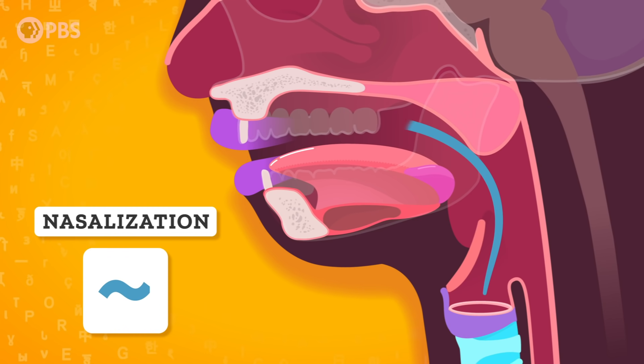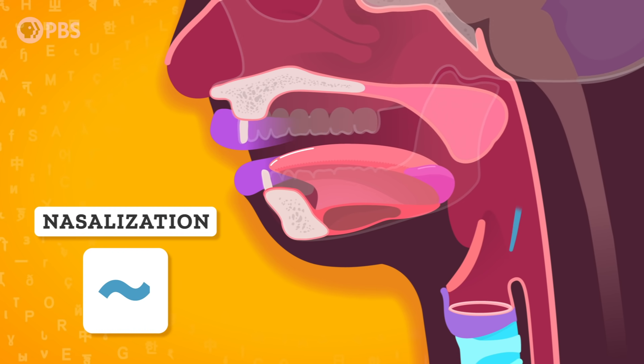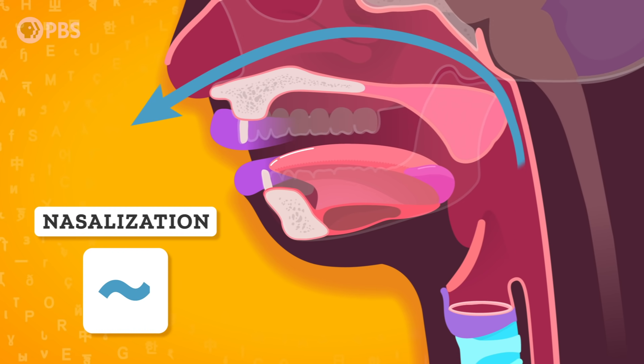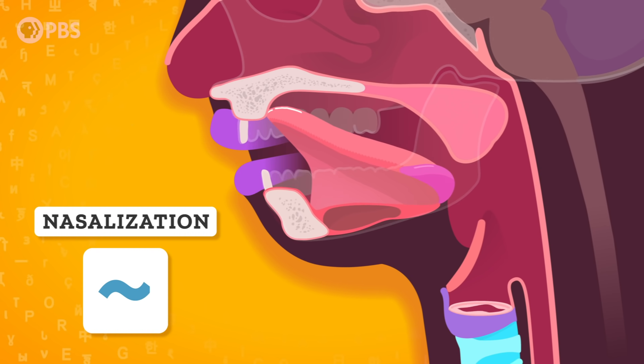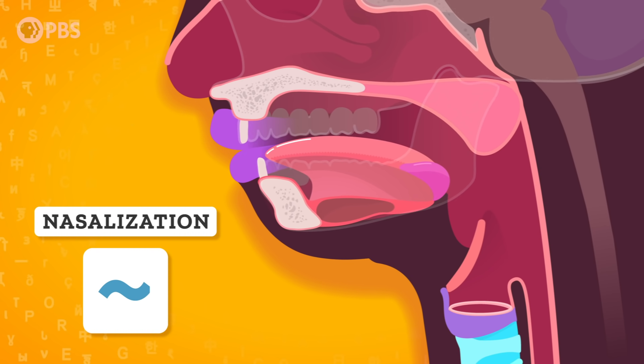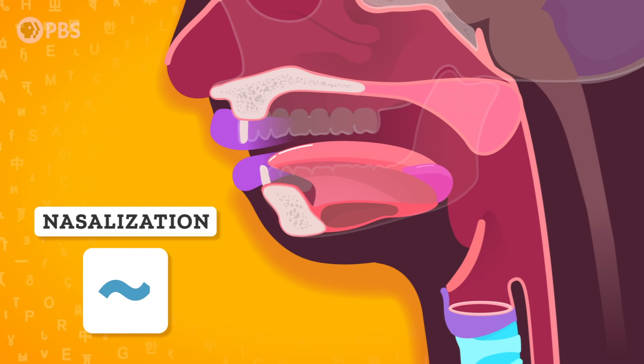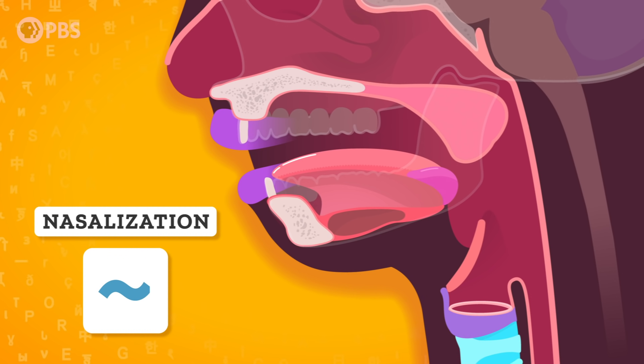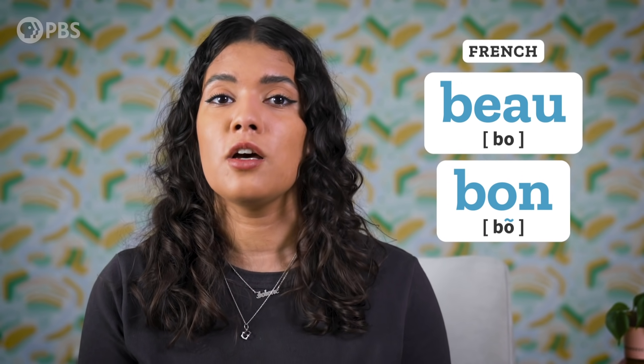Second is nasalization. We make the vowel sounds we've been talking about so far by moving air through our mouth. We can also make sounds by letting air flow through the nose. We make nasal consonants like 'm' and 'n' by completely blocking the air in the mouth and having it come out the nose. But we can also make nasal vowels, with both the mouth and the nose open. This is known as nasalization, and it has a diacritic too. Nasalization is a feature of French — 'beau,' meaning beautiful, and 'bon,' meaning good, differ in that 'bon' has a nasalized vowel. In English, you might have encountered nasalization in a very relaxed pronunciation of 'I don't know.'